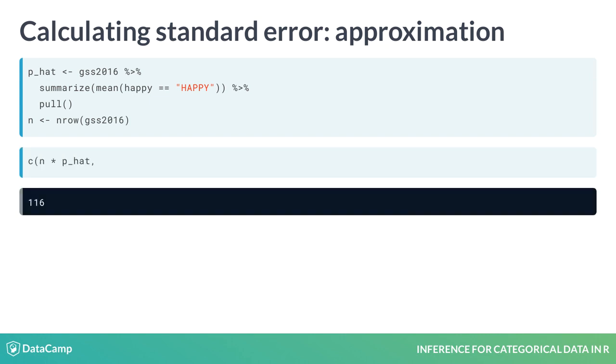Let's check the rule of thumb to see if our sample size is large enough by multiplying n times p-hat and n times 1 minus p-hat. This gives 116 and 35, both greater than or equal to 10, so our sample size should be sufficiently large.